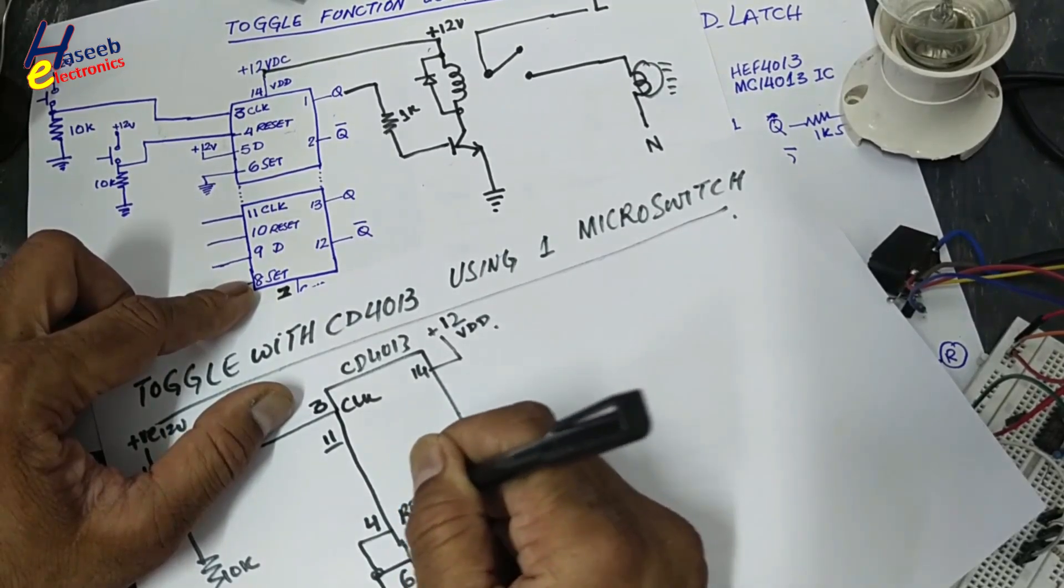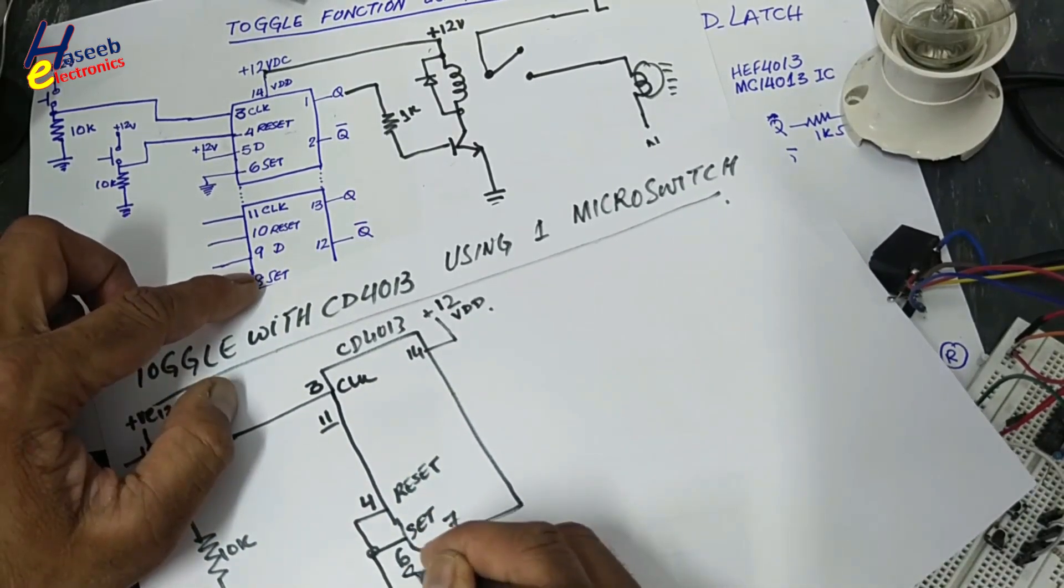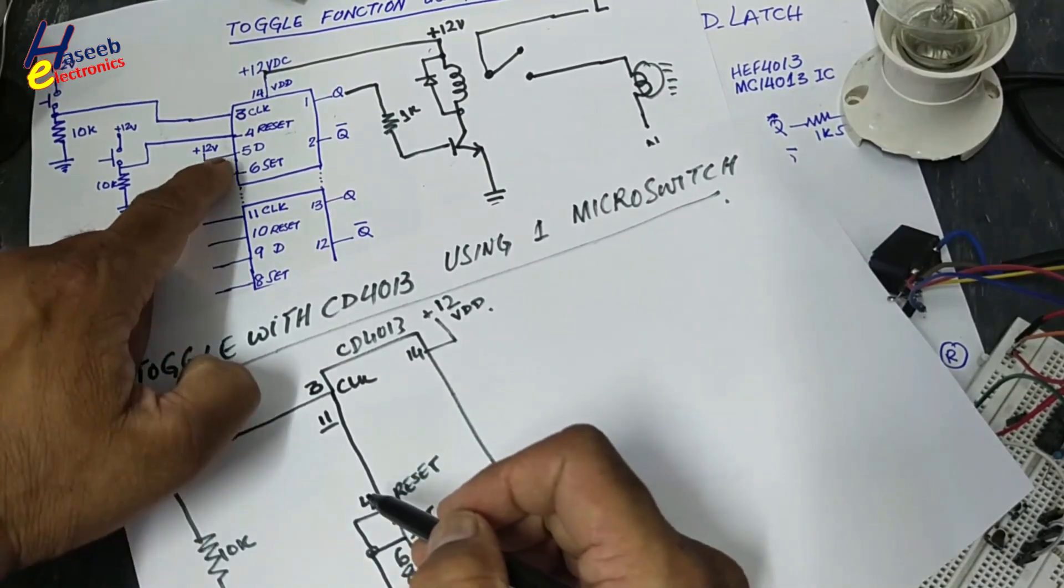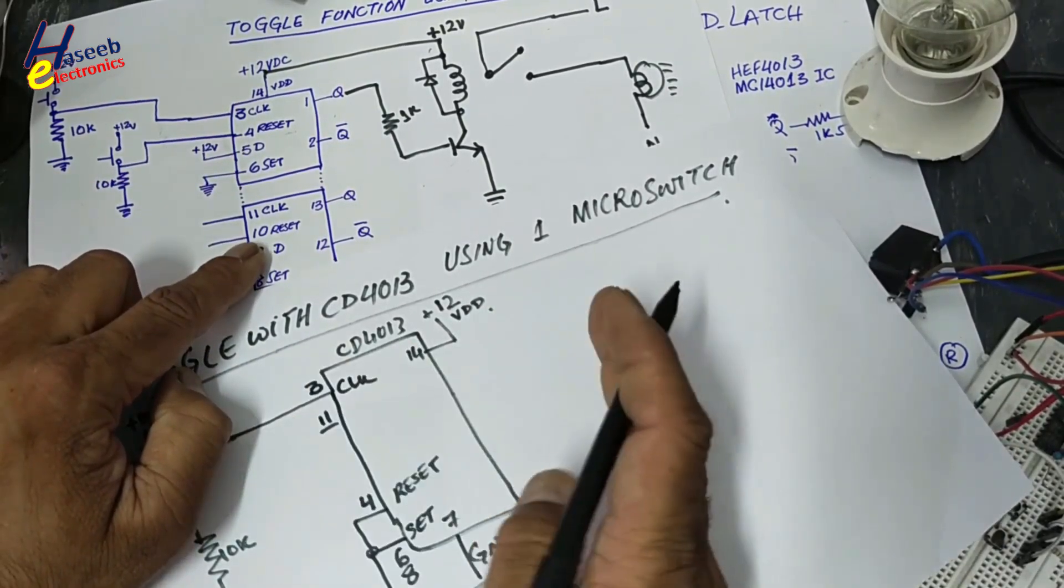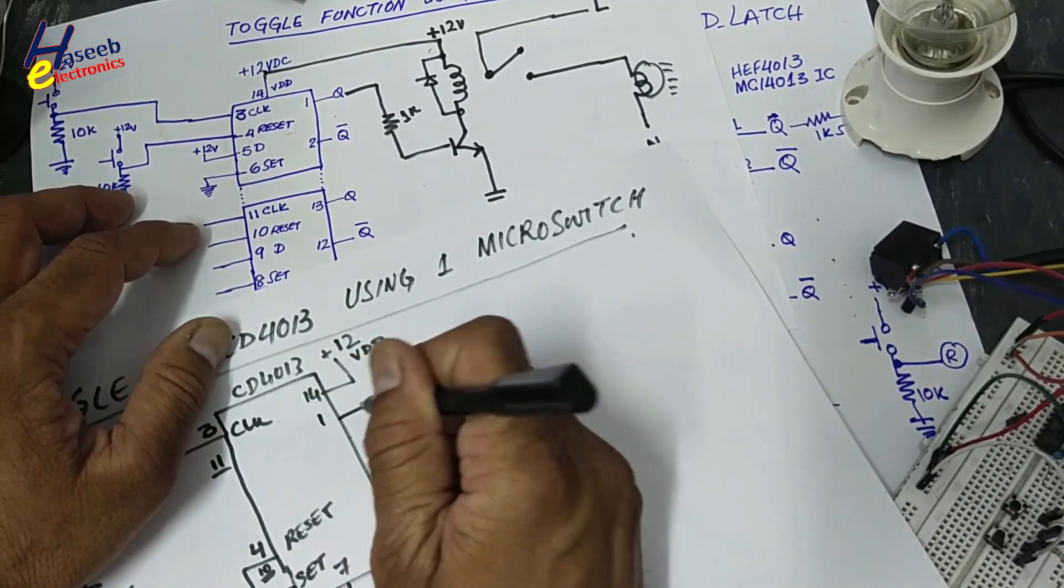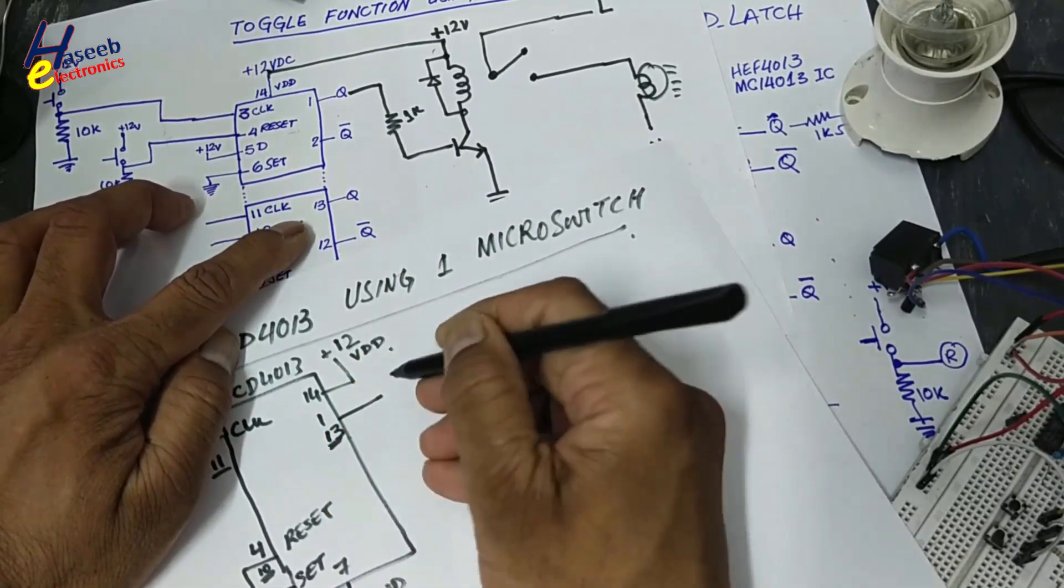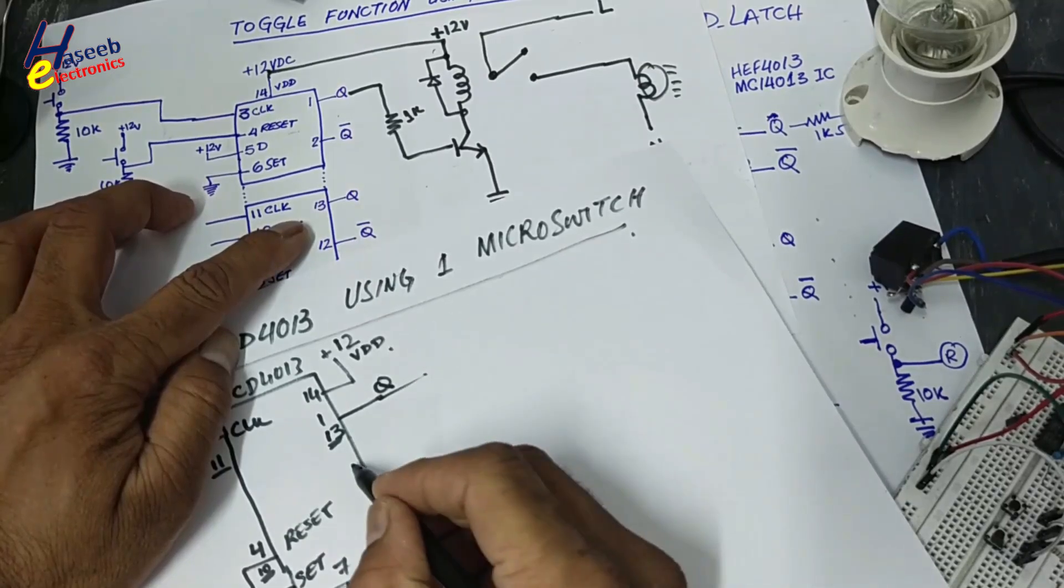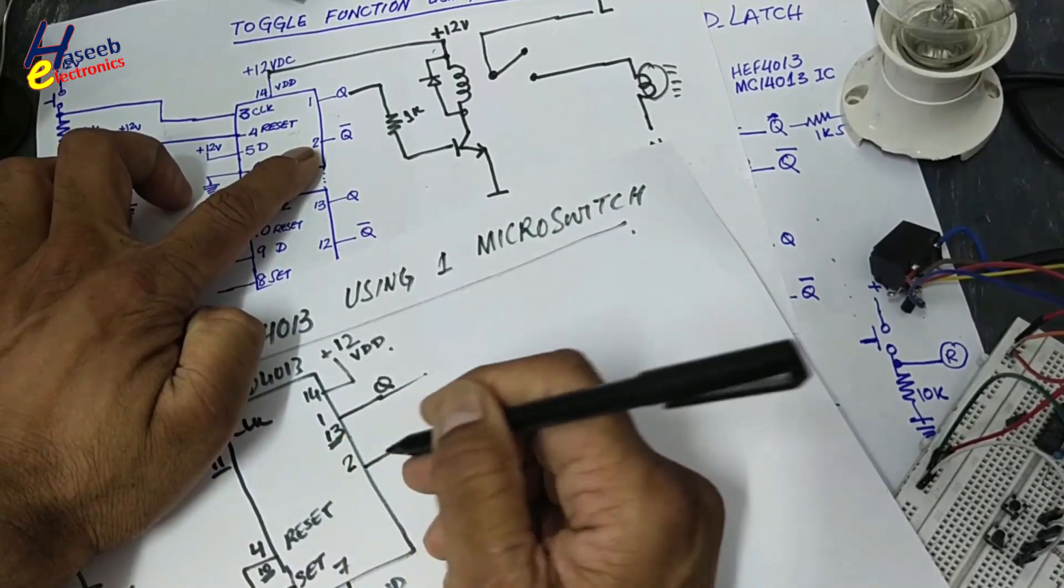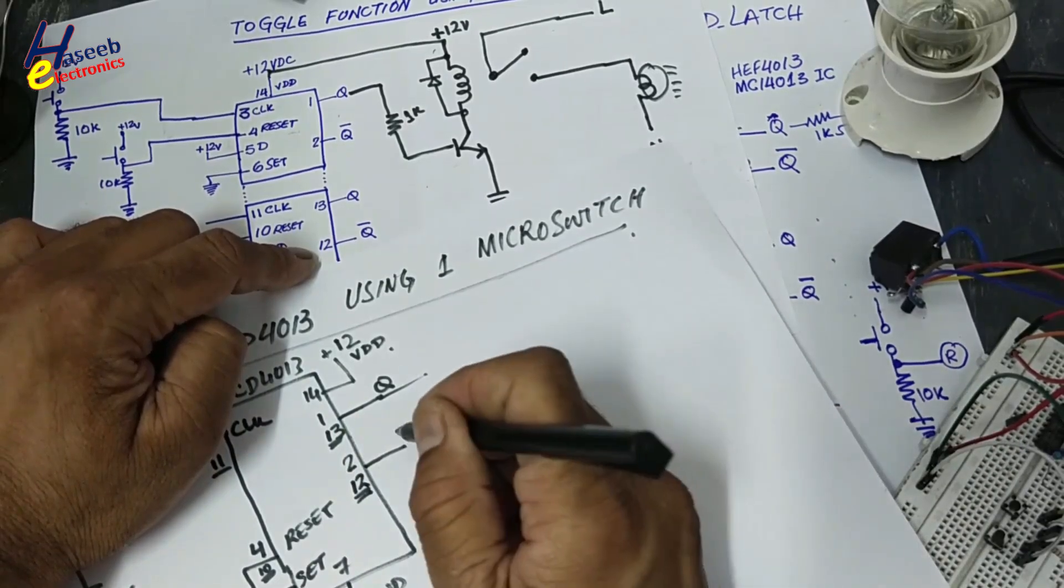Set. If you are using second section, pin number 8 will set. Here we are using pin number 4 reset. In second channel, pin number 10 will reset. Pin 1 output. If you are using second channel, pin 13 output. Q output. Q bar pin 2 for first channel. If you are using second channel, pin 12. That is Q bar output.